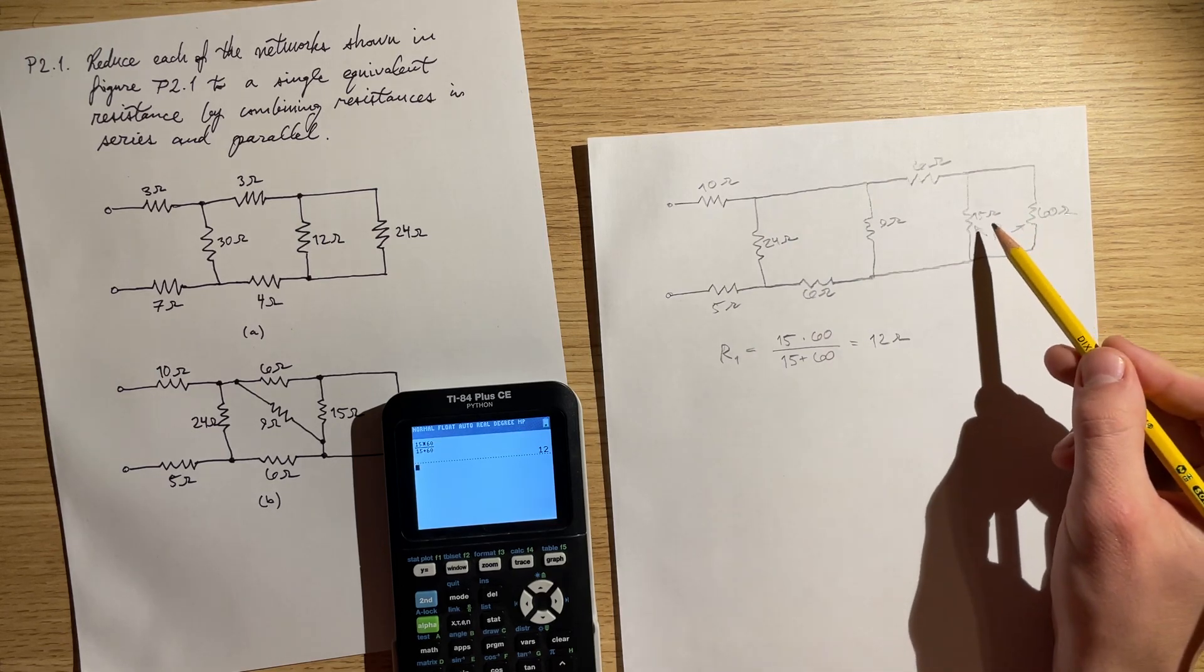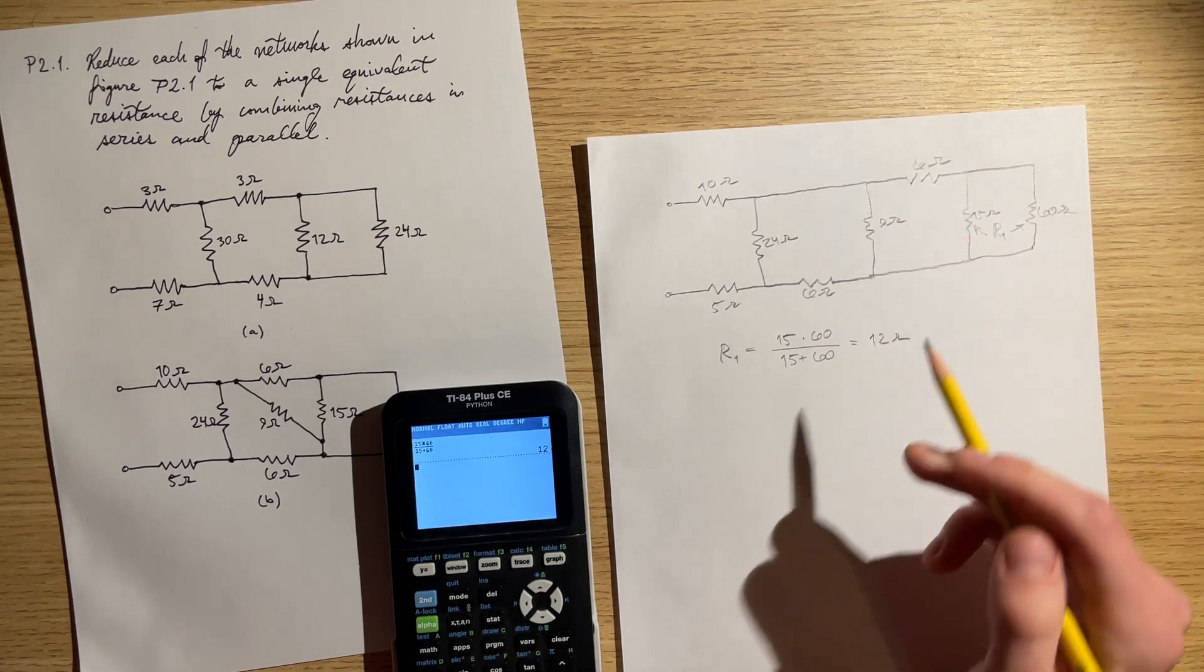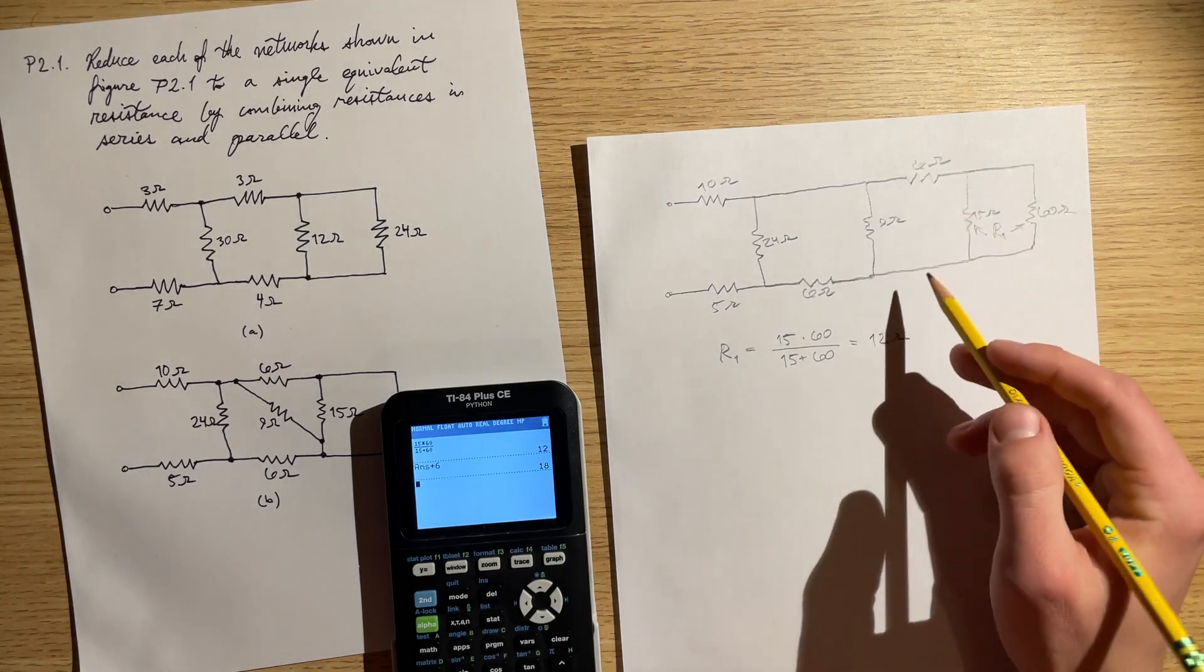So I'm just going to put these in here and we get 12 ohms. So we have 12 ohms right here. That can be added to 6 ohms in series.